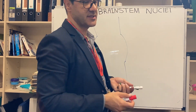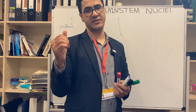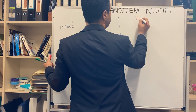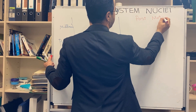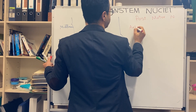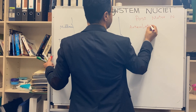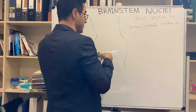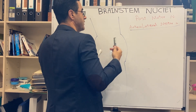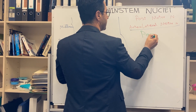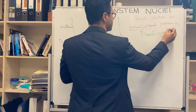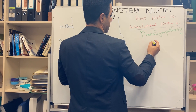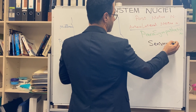The motor nuclei in the brain stem are subdivided into posterior and anterolateral motor, respective to their position in the brain stem. So we have posterior motor nuclei, we also have anterolateral motor nuclei — I'm going to show them in blue. And then we have parasympathetic nuclei, and finally I'm going to demonstrate the sensory nuclei in black.